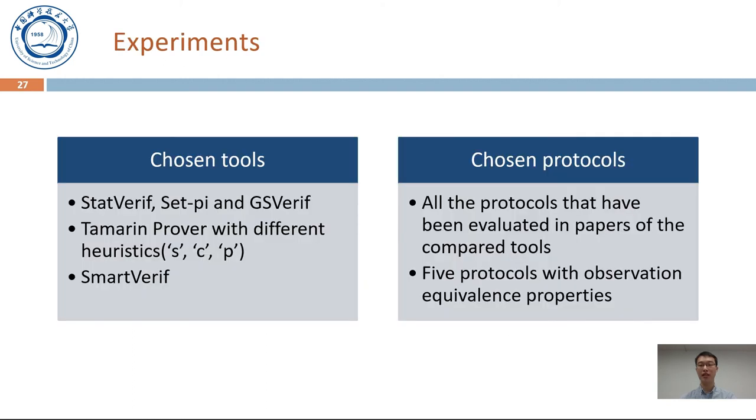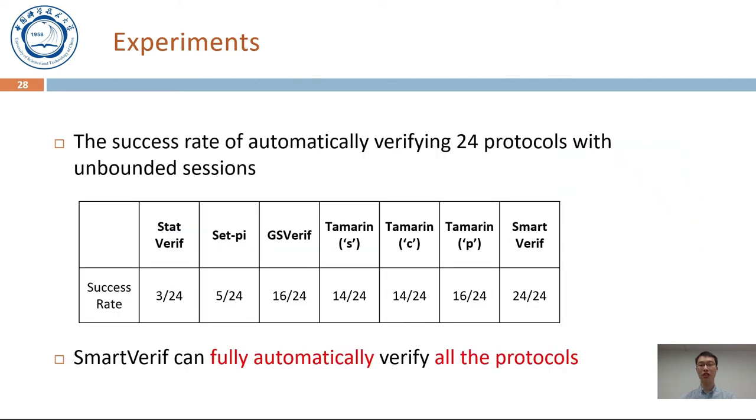In our experiments, we choose typical state-of-the-art tools such as StateVerif, SetPy, GSVerif, and Tamarin Prover with different heuristics to compare with SmartVerif. The studied protocols include all the protocols that have been evaluated in papers of the compared tools and five protocols with observation equivalence properties. We calculate the success rate of automatically verifying 24 protocols with unbounded sections using each tool. As illustrated in the table, SmartVerif can fully automatically verify all the protocols.